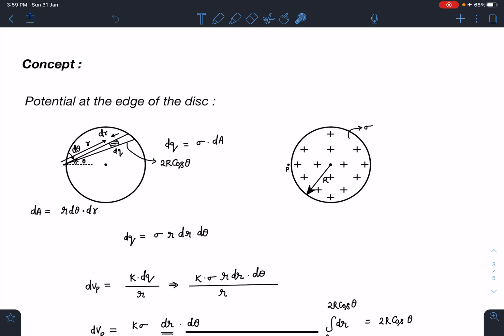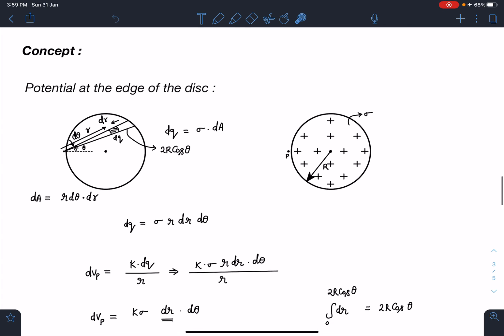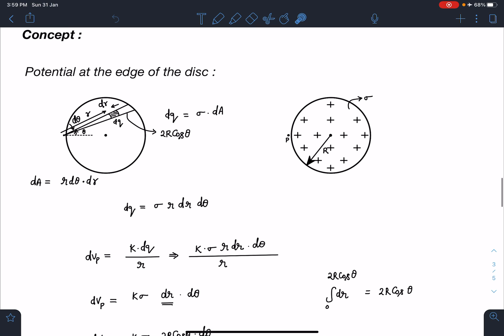The area will become r*dr*d(theta). So I can write dq as sigma*r*dr*d(theta). When I am using the formula of dVp which is k*q/r, where q is the charge of this element and r is the distance from point P.